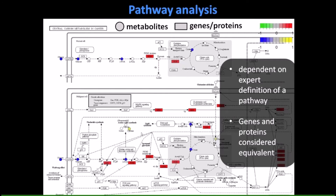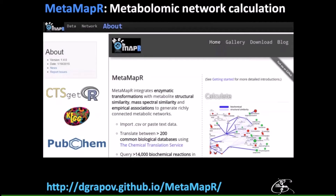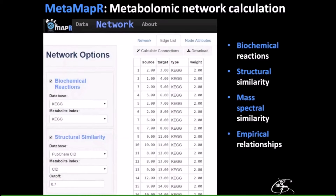To escape the pathway constraint, we can turn to metabolomic network analysis. Here is an example with over 1,200 metabolites connected either by biochemical reactions (red edges) or by structural similarity from the PubChem database. Both methods together are necessary to fill in the gaps — some analytes are well-connected by known biochemistry, while for lipids there's very little known biochemistry and you really need structural similarity to tie them together. I developed a tool called MetaMapper which allows metabolomic network calculation incorporating the KEGG database, PubChem, chemical identifier translations through CTS, biochemical reactions, structural similarity connections, and mass spectra for unknown analytes.